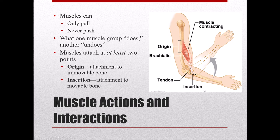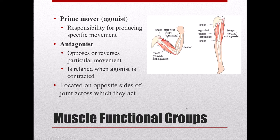If we have one muscle that flexes the forearm, we have to have another muscle that can undo it so we can extend our forearm. Muscles do come in pairs like that. The agonist or prime mover is the muscle responsible for a particular motion — so the biceps brachii contracts and the forearm flexes. Its antagonist is the muscle that causes the opposing motion, undoing what the biceps just did. In this case, that's the triceps brachii, which when it contracts, extends the forearm.